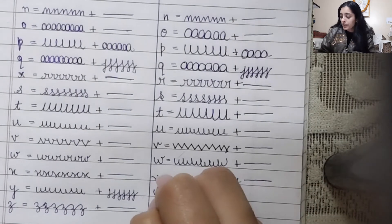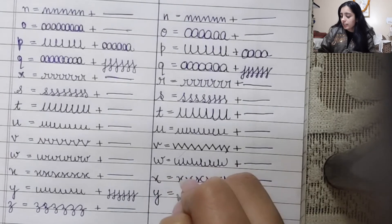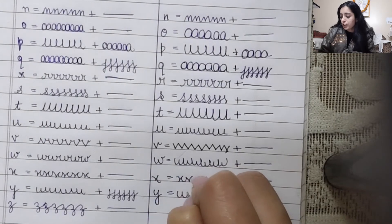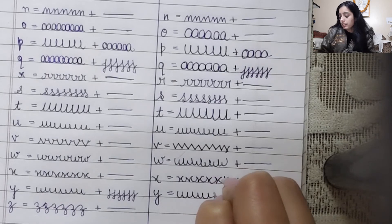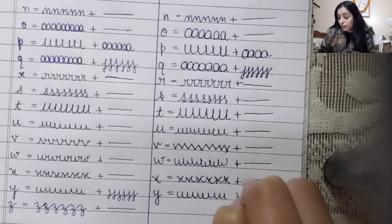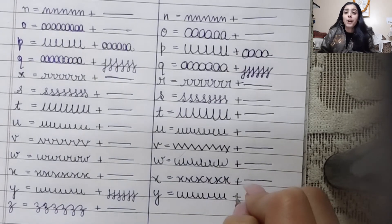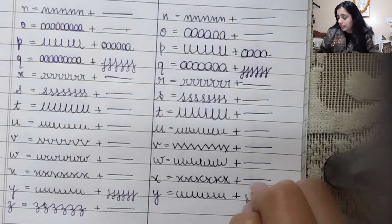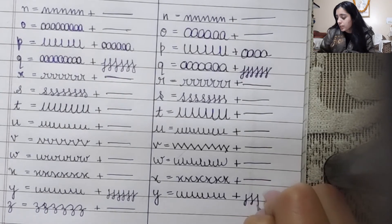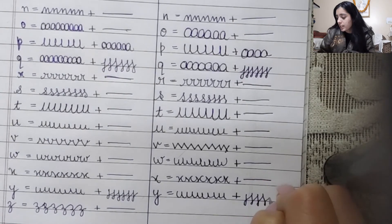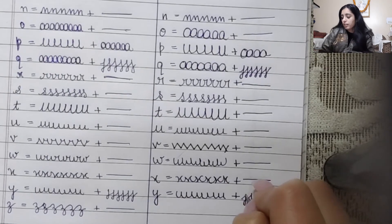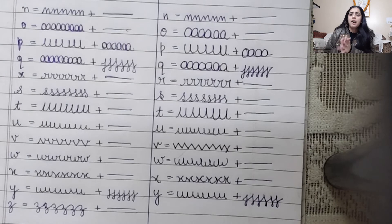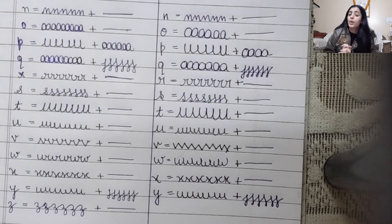For Y, practice making it in a spiral, and we'll also use the downward technique. Coming on to our last alphabet of the series — Z.